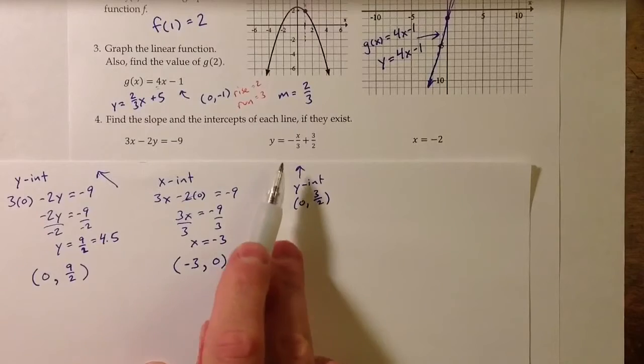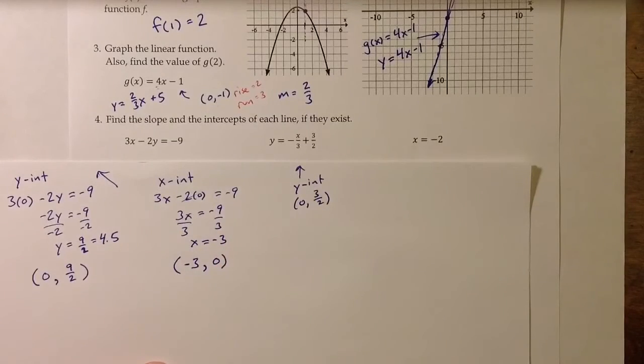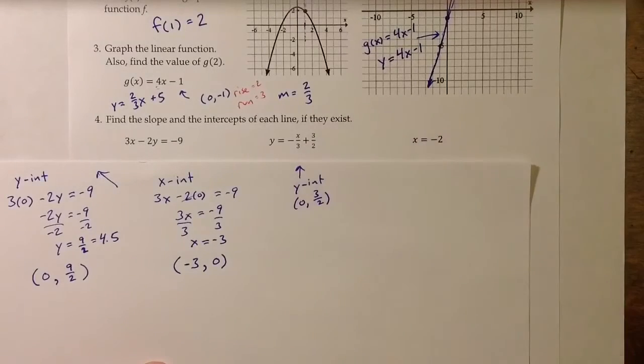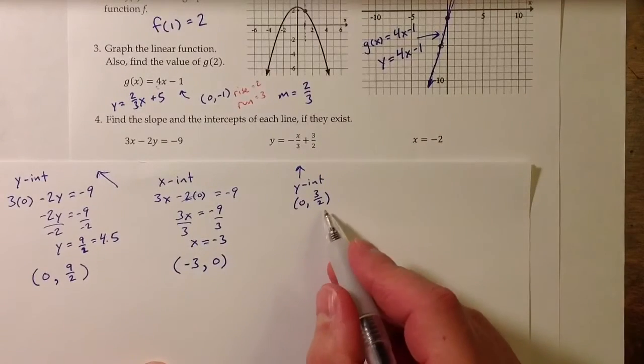We can see that from the equation if I plug in 0 for x. That first fraction, 0 divided by negative 3, is 0, so it goes away, and y has to equal 3 halves.